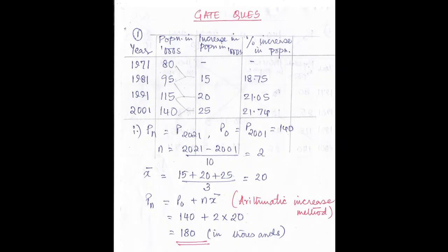Let us solve the problem. First, make a table. The first column is for years: 1971, 1981, 1991, 2001. The second column is population in thousands: 80, 95, 115, 140. The third column is increase in population. The first row is blank. From the second row: 95 − 80 = 15, 115 − 95 = 20, 140 − 115 = 25.